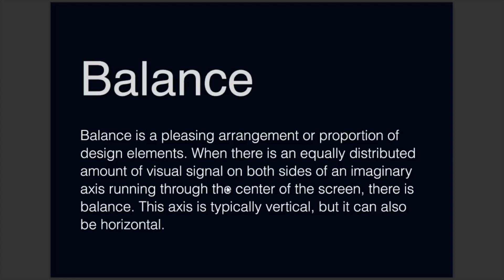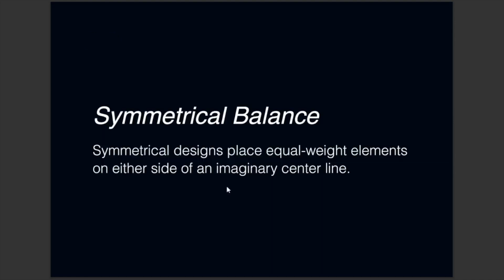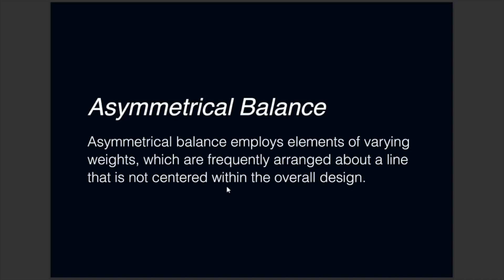Next is balance. Balance is a pleasing arrangement or proportion of design elements. When there is an equally distributed amount of visual signals on both sides of an imaginary axis running through the center of the screen, there is balance. This axis is typically vertical but can also be horizontal. We basically have two standard types of balance: symmetrical balance and asymmetrical balance. Symmetrical balance places equal weight elements on either side of an imaginary center line, while asymmetrical balance employs elements of varying weights, frequently arranged about a line that is not centered within the overall design.